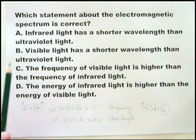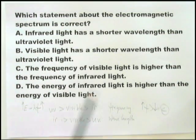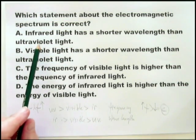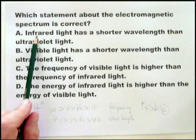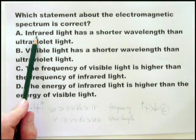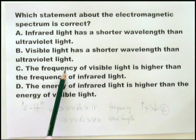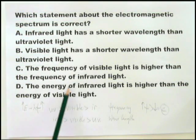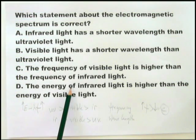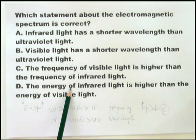So when we look at this question — which statement of the electromagnetic spectrum is correct? — you have to quickly look through it. Infrared light has a shorter wavelength than ultraviolet light? No, it doesn't. Visible light has a shorter wavelength than ultraviolet light? No, it doesn't. Frequency of visible light is higher than the frequency of infrared light? That is true. Energy of infrared light is higher than the energy of visible light? No, it isn't.